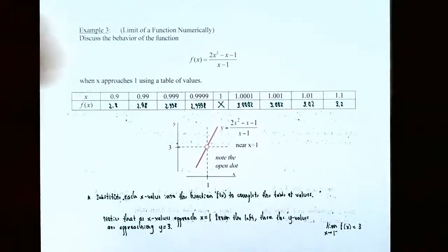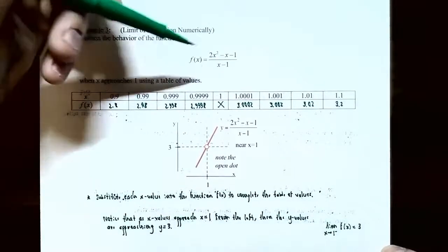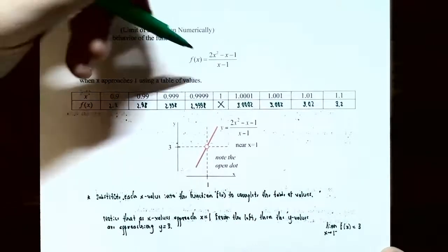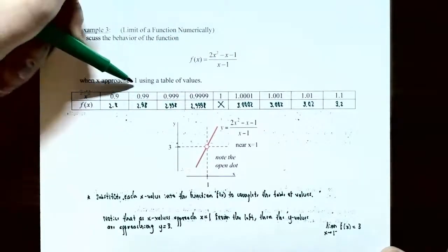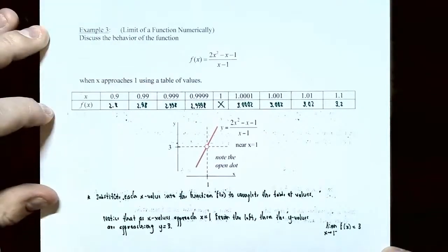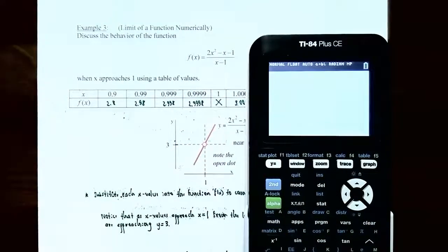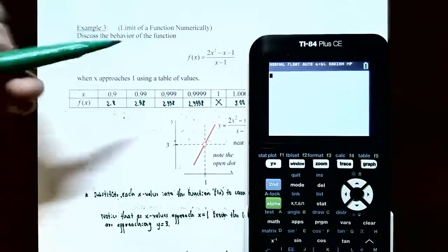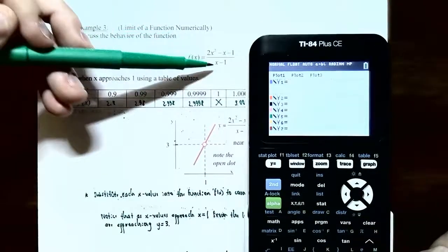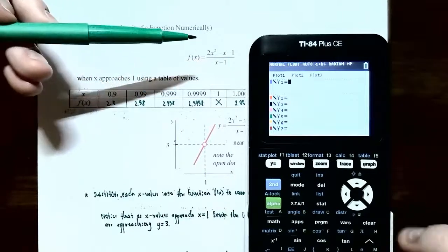Example three: limit of a function numerically. Discuss the behavior of the function f of x equals (2x² − x − 1) / (x − 1). We're interested in what happens when x approaches one. Since no direction is specified, we're approaching from both the left and right using a table of values. I'll show you how to generate a table of values using a graphing calculator — the TI-83 or TI-84. Go to y equals in the top left corner and clear any existing function.